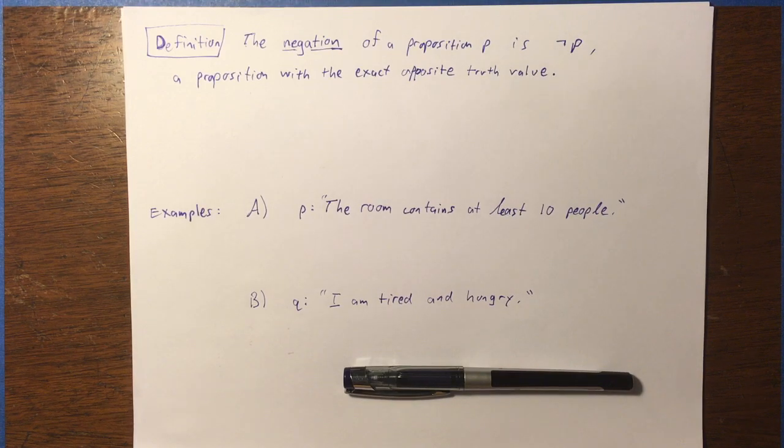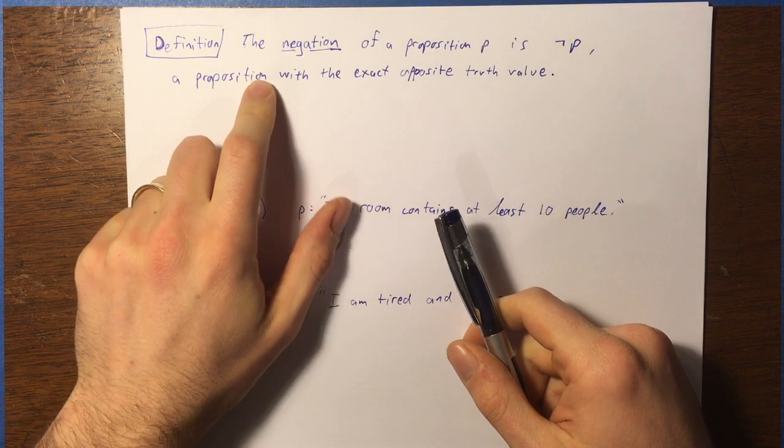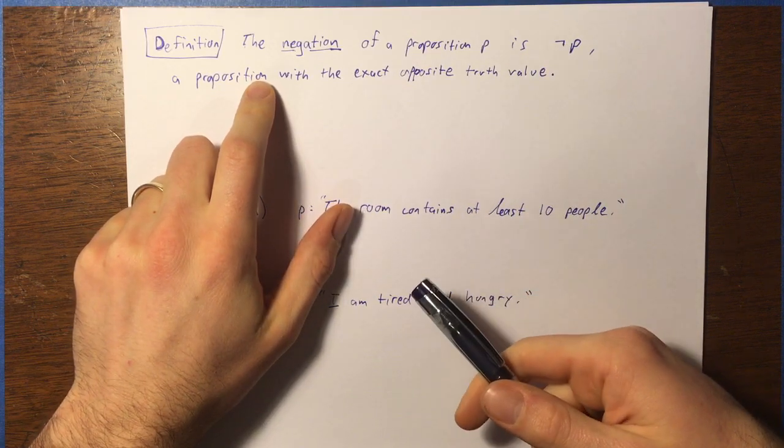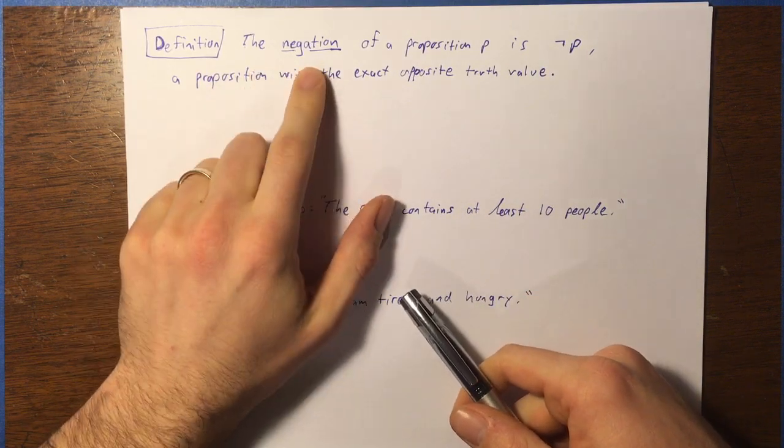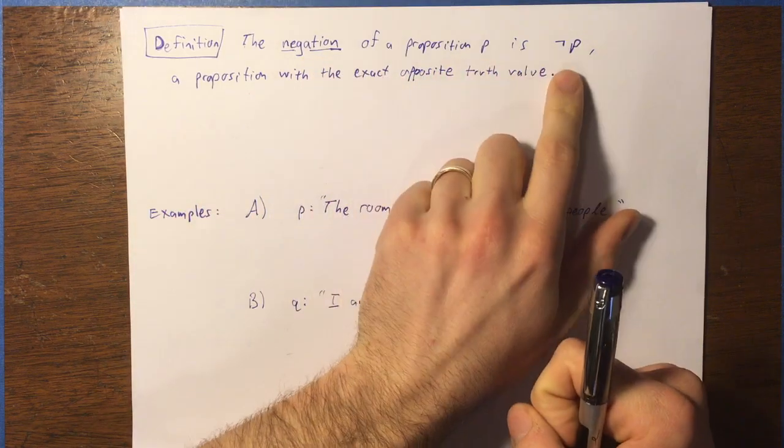So what we need to do now is start learning about logical operations. So the first operation we're going to learn is actually a unary operation, which means that it acts on one input, and it's called the negation.